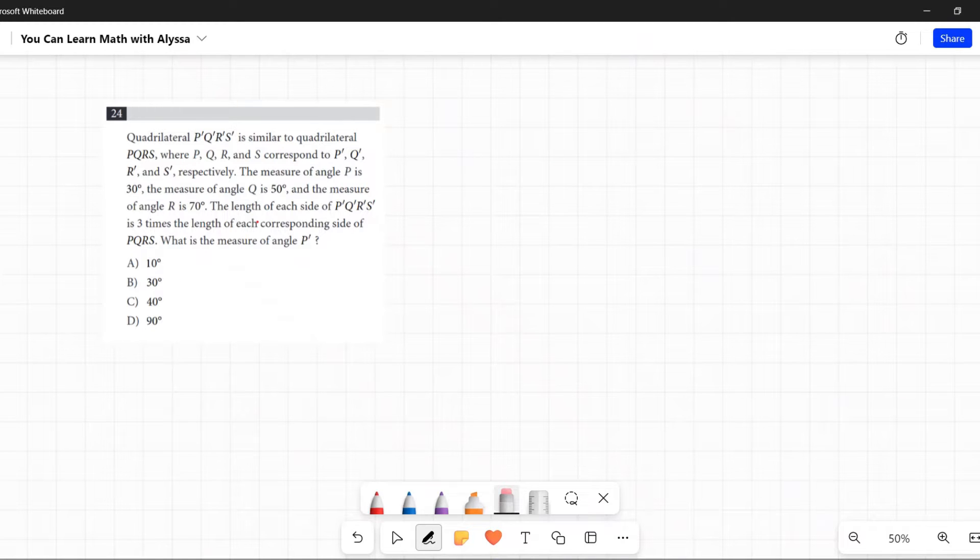Quadrilateral PQRS prime is similar to quadrilateral PQRS where PQRS correspond to P prime QRNS prime respectively. Now I'm going to draw, before I go any further before I get into what these angles are, I am just going to draw a quadrilateral.